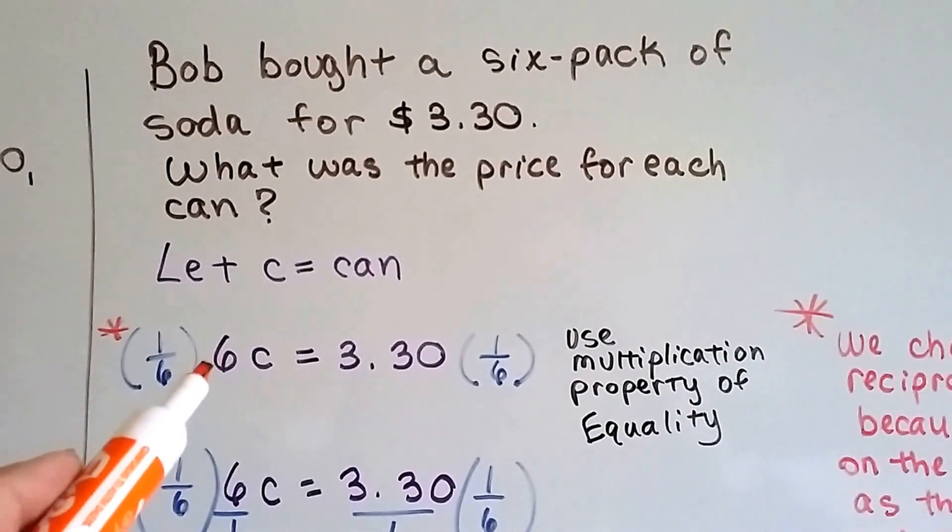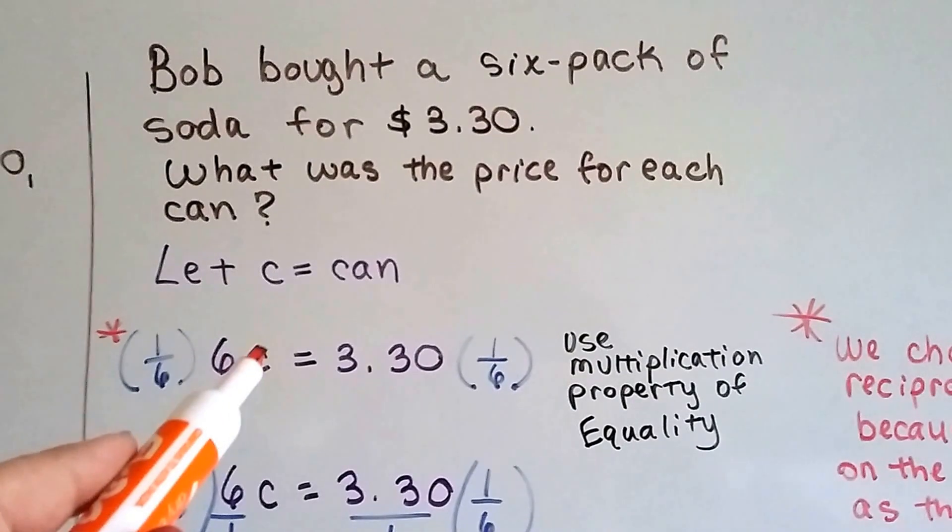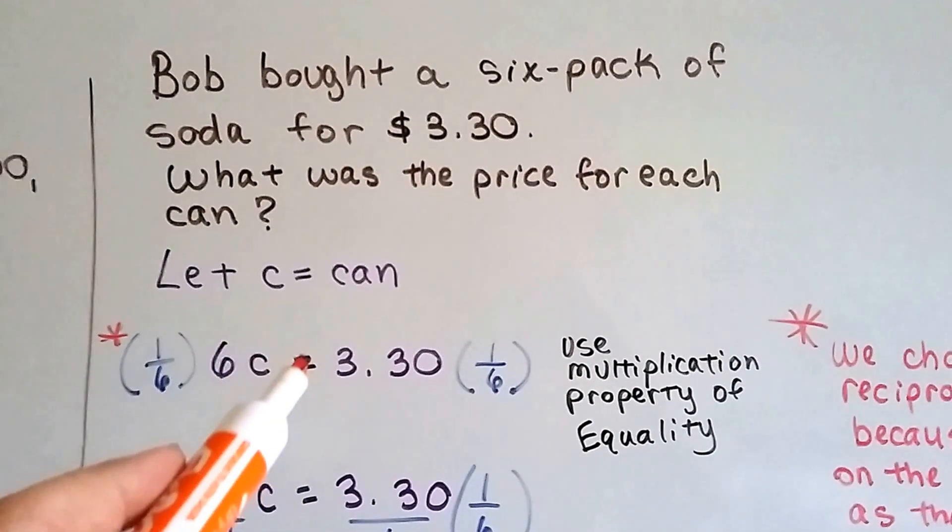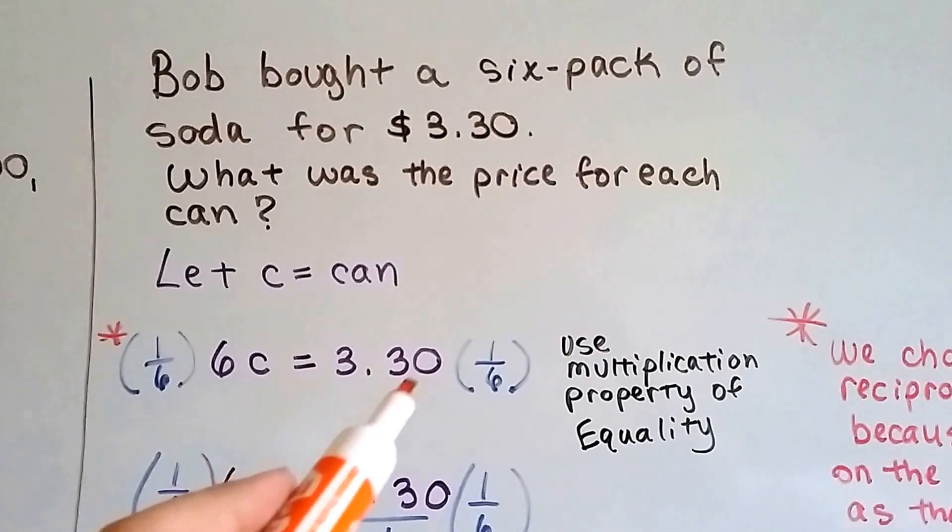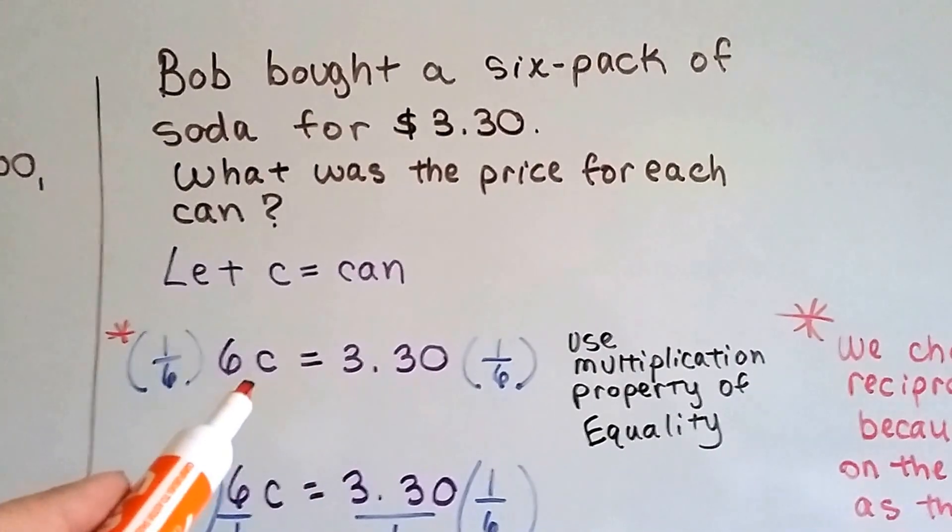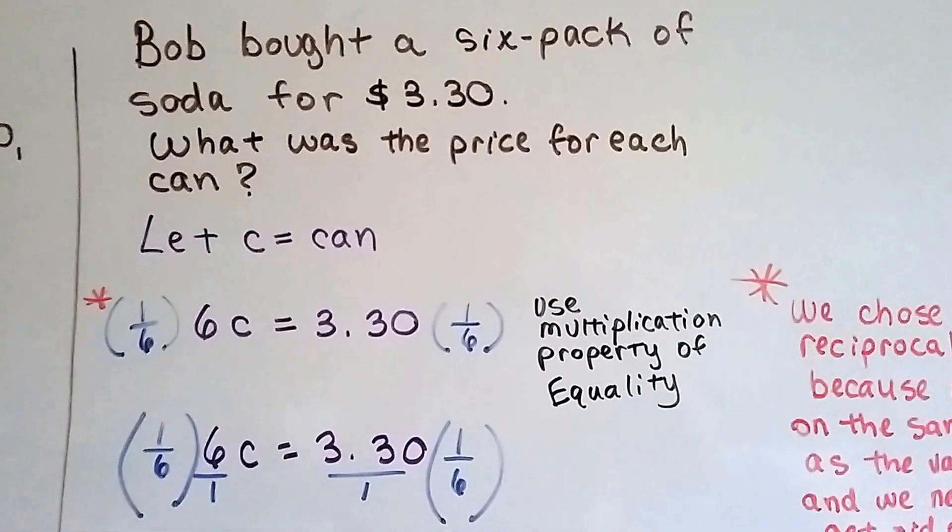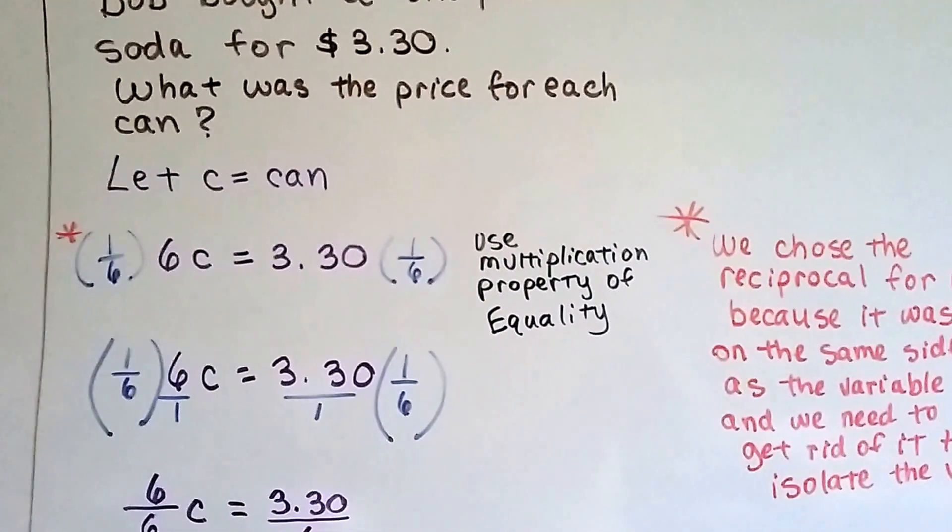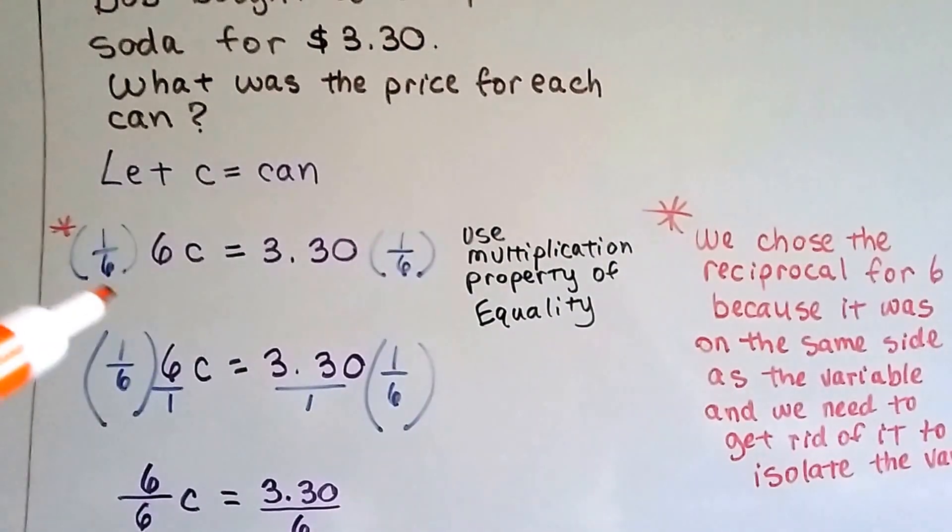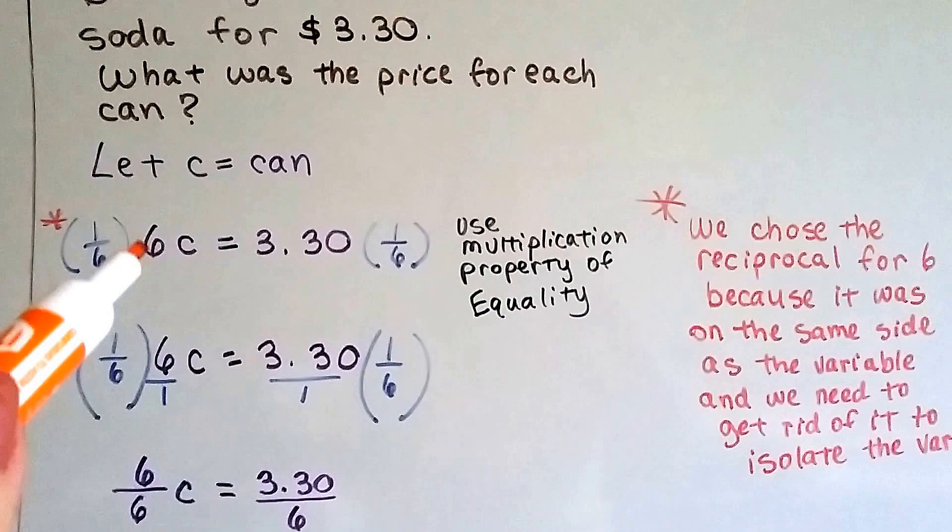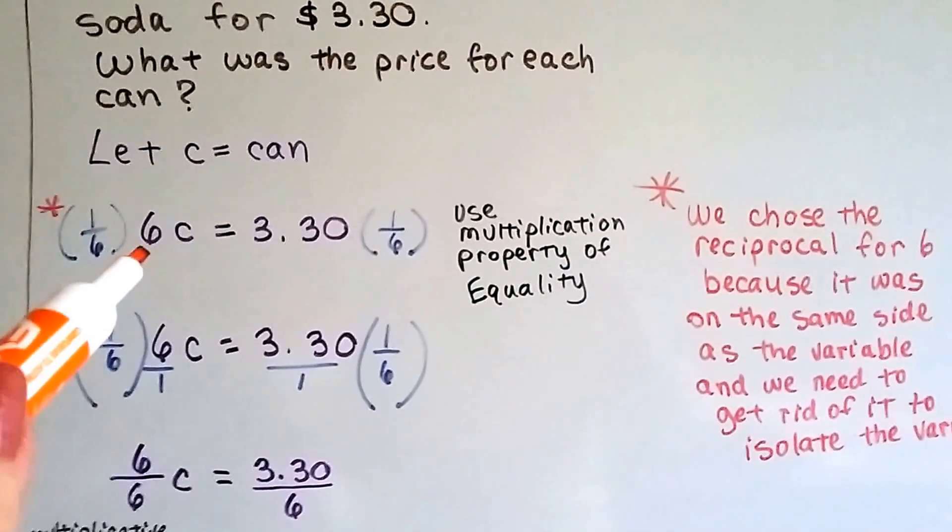And because this six is now on the same side as the variable. Six cans equals $3.30. Doesn't that make sense as an equation? And we need to get rid of this six so that the C is by itself, so we can solve this. And we chose one-sixth to multiply on both sides with the multiplication property of equality because that is the reciprocal of six.